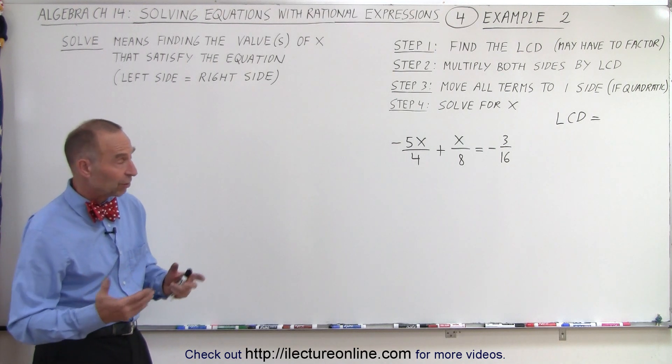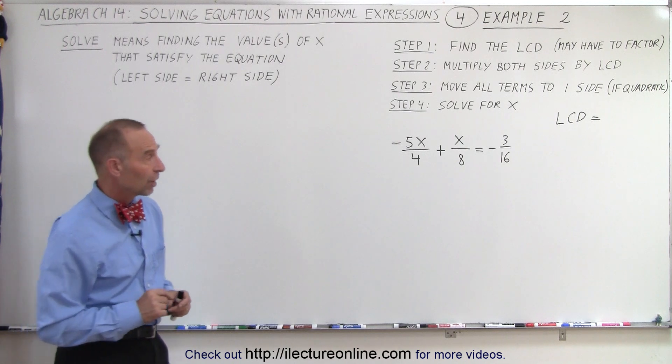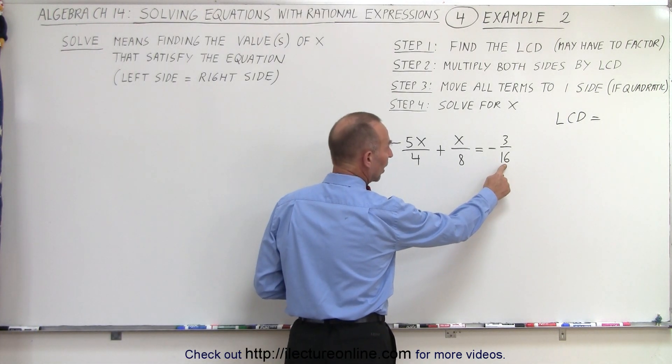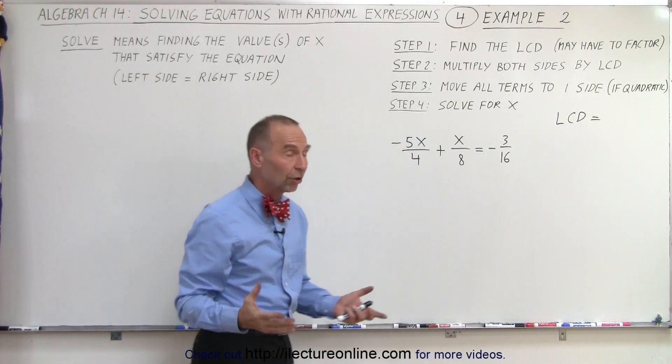Again, they're rational expressions that make up this equation, so we're going to have to find the lowest common denominator. We quickly check and look at the largest of the denominators and notice that the two smaller ones fit evenly into the larger one,